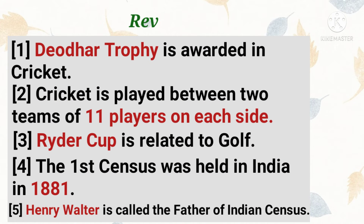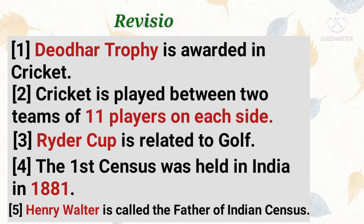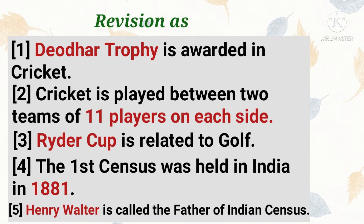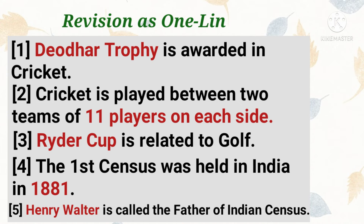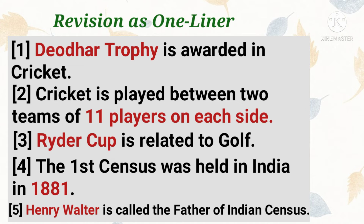Now it's time for revision as one-liners for memorizing. Number 1: the Duleep Trophy is awarded in cricket. Number 2: cricket is played between two teams of 11 players on each side. Number 3: Ryder Cup is related to golf.